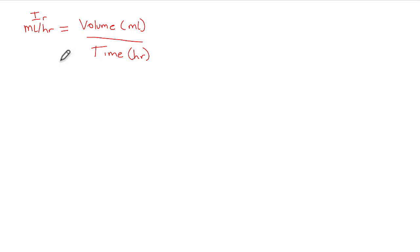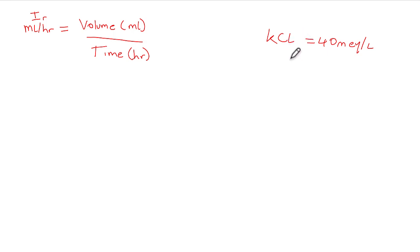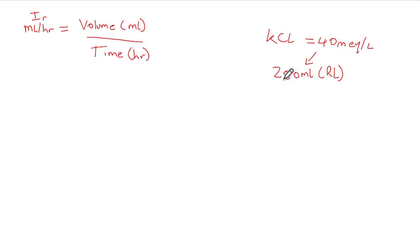For example, suppose you want to replace potassium chloride in a patient. The order on the file is 40 milliequivalents of potassium chloride per liter, added to about 250 mils of Ringer's lactate. This 250 mils has to run over four hours — so what is the infusion rate you're going to enter on the infusion pump?